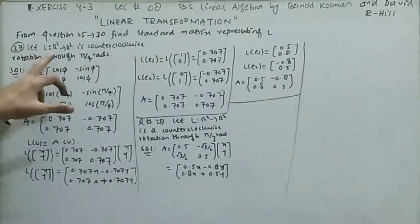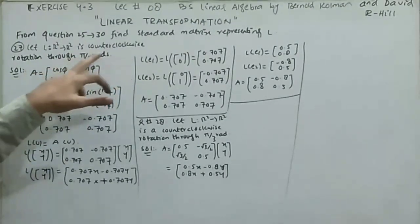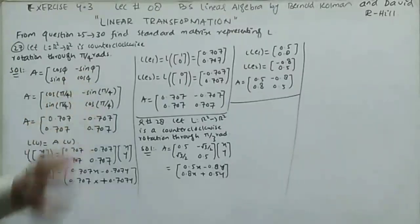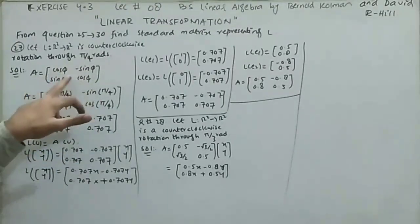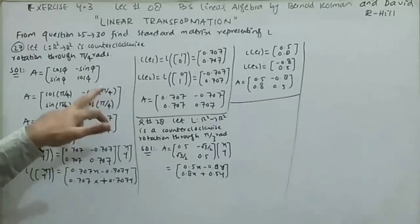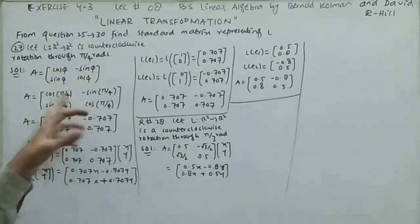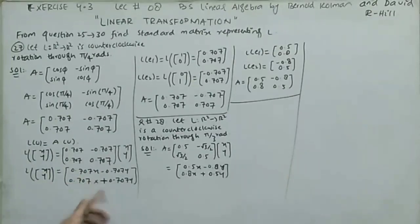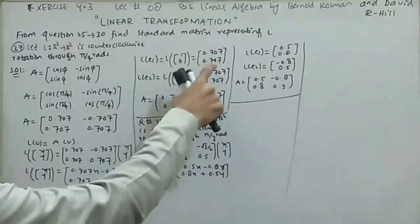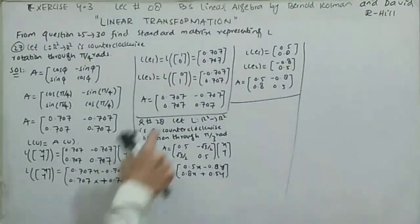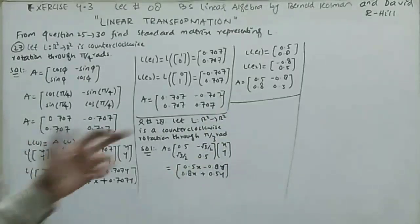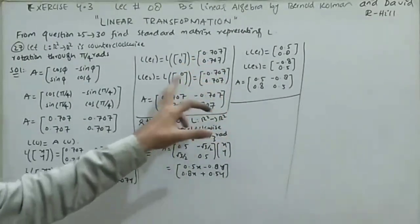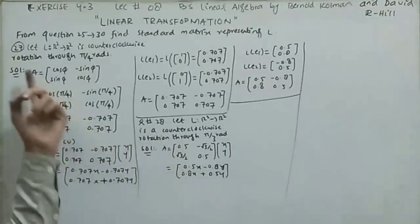Question 27: L is a counterclockwise rotation of R² through π/4 radians. The rotation matrix is A = [cos θ, -sin θ; sin θ, cos θ]. Substituting θ = π/4: cos(π/4) = 0.707 and sin(π/4) = 0.707. Evaluating L(e₁) = (0.707, 0.707) and L(e₂) = (-0.707, 0.707). The required standard matrix has all entries equal to 0.707.